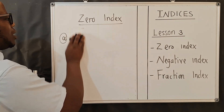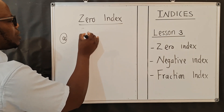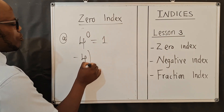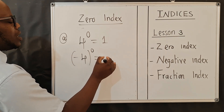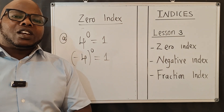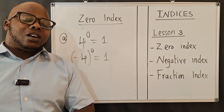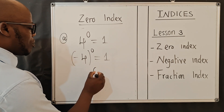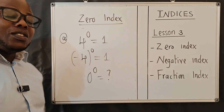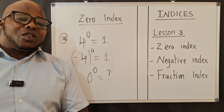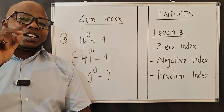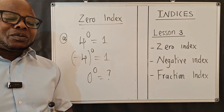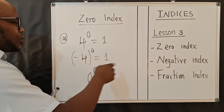Let's use numbers. Four to the power zero gives us one. Negative four to the power zero inside brackets gives us one. This is where we say anything to the power zero gives one. One more thing: what about zero to the power zero? Comment in the comment section below what you get when you find zero to the power zero — that one is for you.